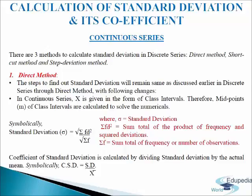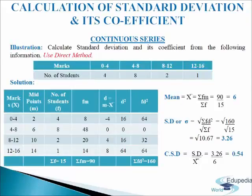Coefficient of standard deviation is calculated by dividing standard deviation by the actual mean. Symbolically it is written: CSD equals to SD divided by mean. Let us understand direct method with the help of the following illustration. In this particular illustration we have to calculate standard deviation and its coefficient from the following information using direct method.